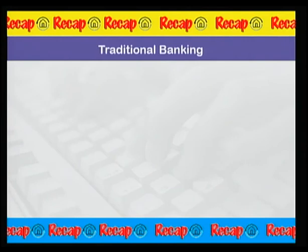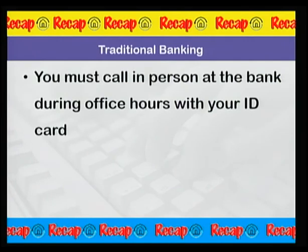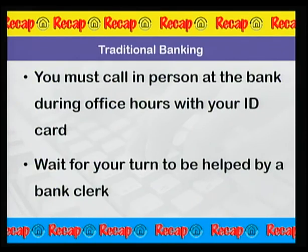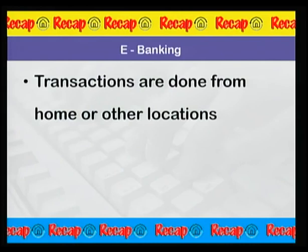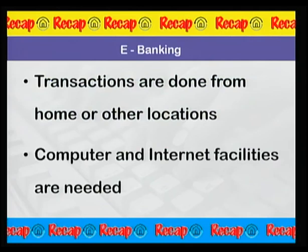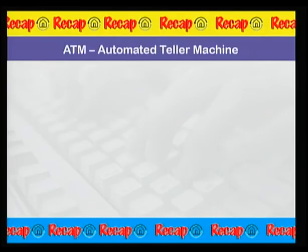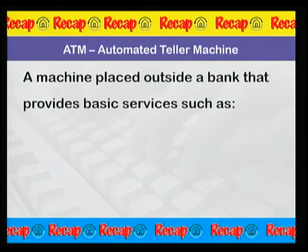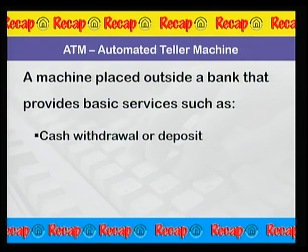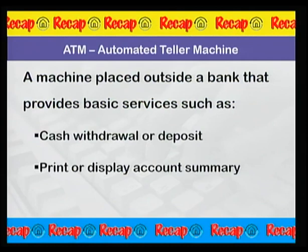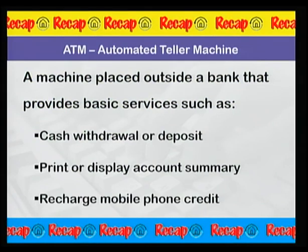I'm sure that you found all the correct answers. Now it's time to make a quick summary of what you have learned today. In traditional banking, you must call in person at the bank during office hours with your ID card and wait for your turn to be helped by a bank clerk. In e-banking, transactions are done from home or other locations with computer and internet facilities. People also use ATMs to do banking transactions instead of going to the bank, for services such as cash withdrawal, cash deposit, printing or displaying account summary, and recharging mobile phone credit. That's all for today — I hope you have enjoyed this video lesson. See you soon in a new video. Bye bye!